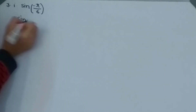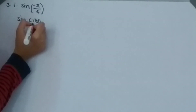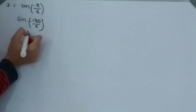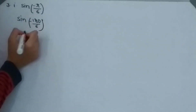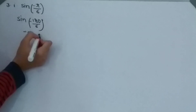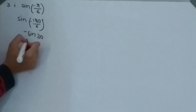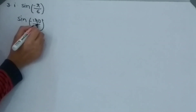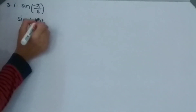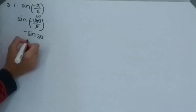Now in the second set of questions, we take sin(π − π/6), which gives minus sin(30°), simplified by cancellation, and the answer is minus 1/2.